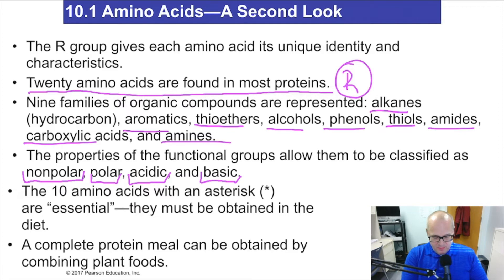Now, in our life, there are 10 amino acids that must be consumed by food. You have to eat them. They're called the essential amino acids, and there's 10 of them. So half the amino acids we need to make our proteins come from a food source. So keep that in mind. A complete protein meal can be obtained by combining plant foods.